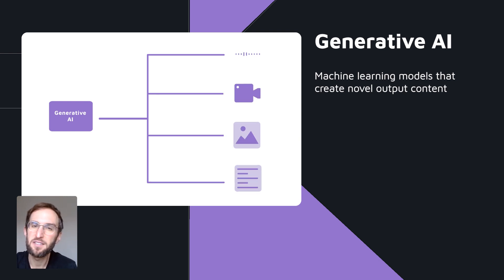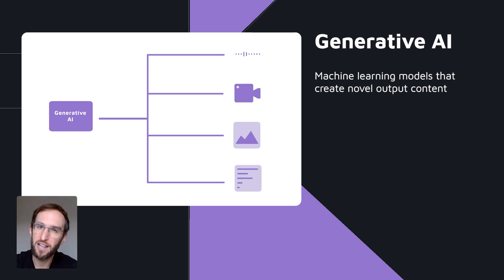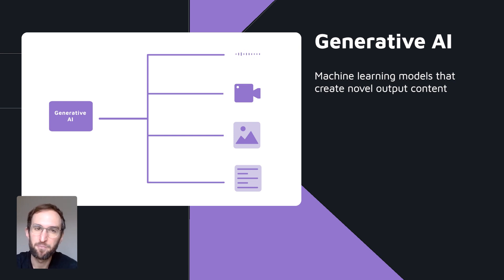ChatGPT falls under the category of generative AI. Generative AI refers to machine learning models that can create novel output content in the form of text, images, audio, video, etc.